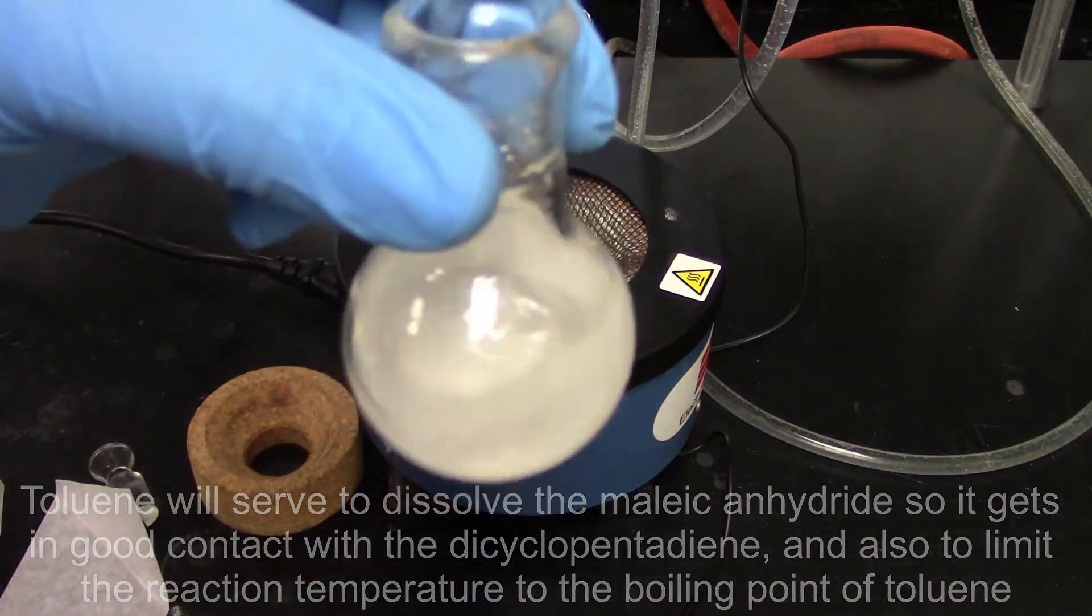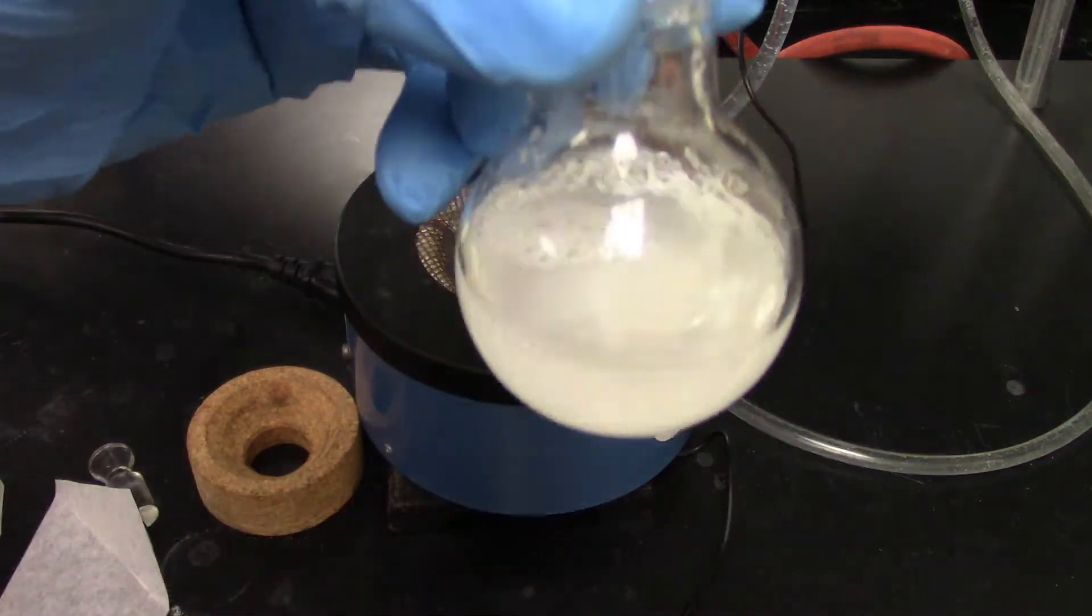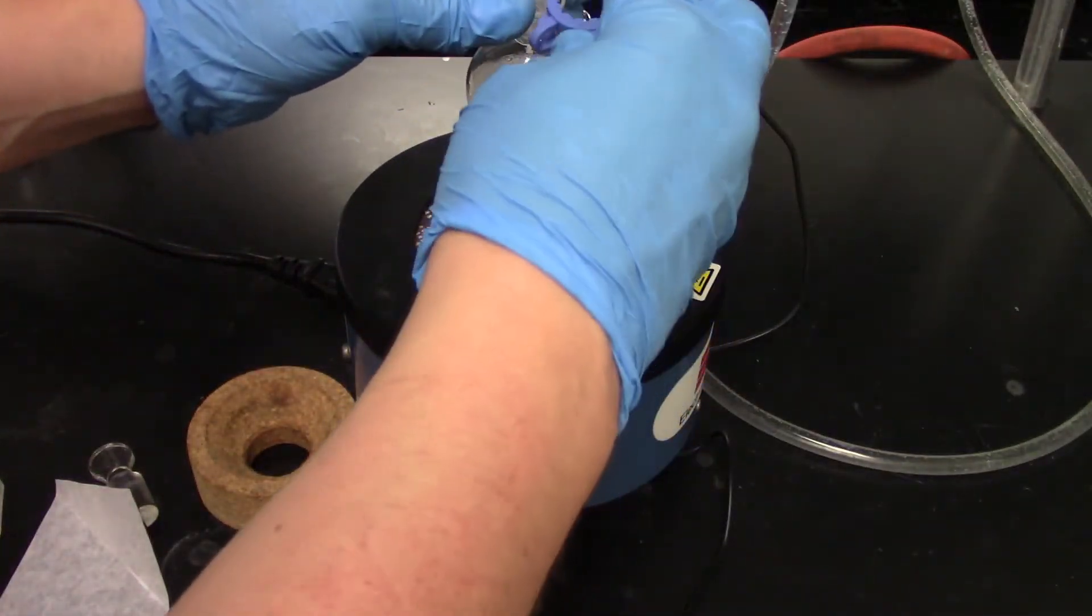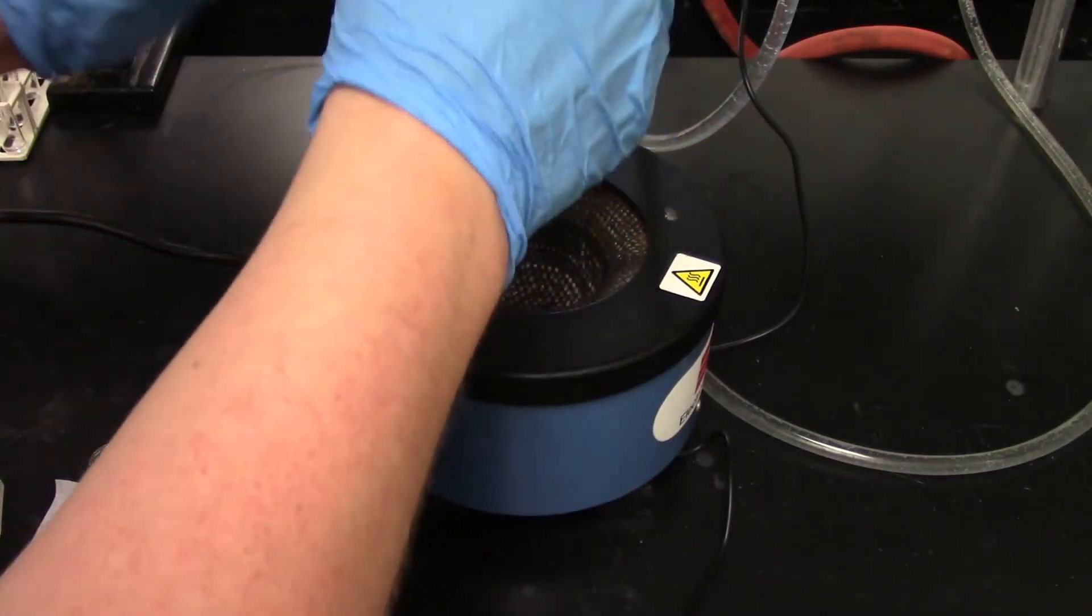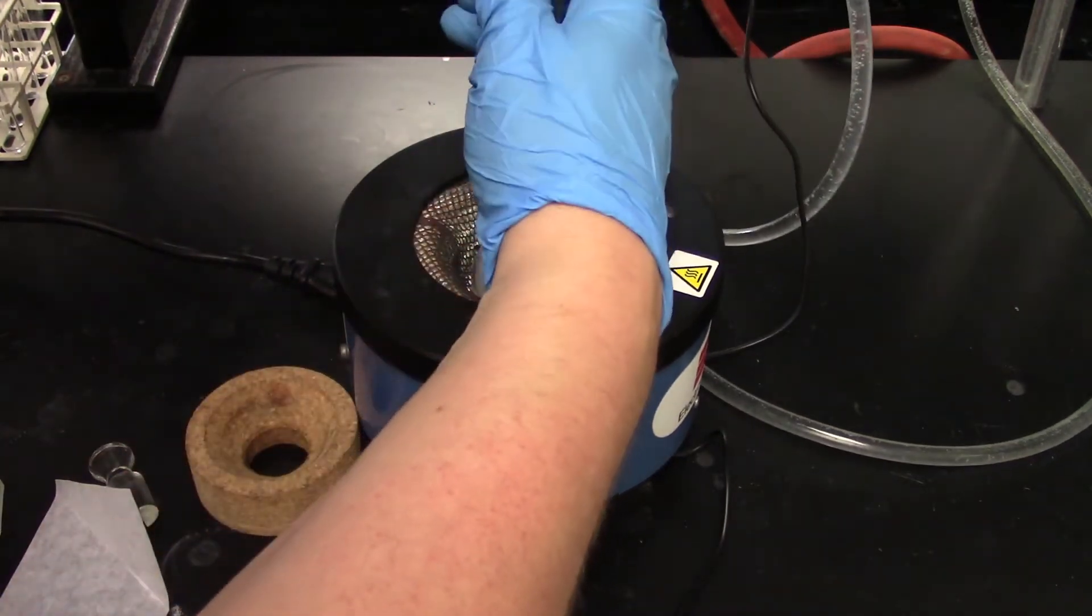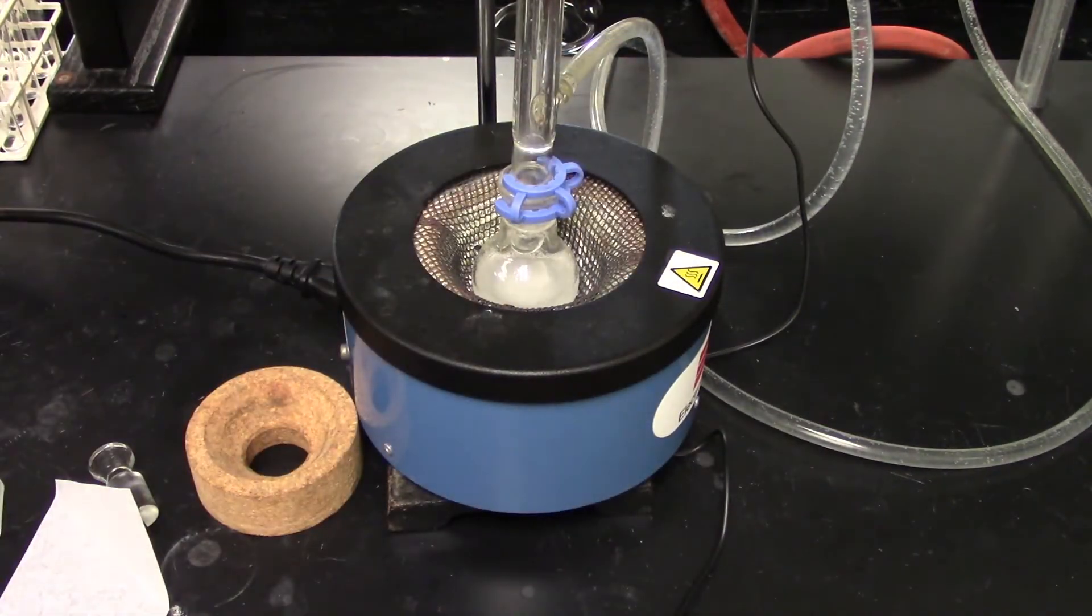So now we've got our mixture of the maleic anhydride, the cyclopentadiene, and a little bit of toluene to ensure good contact between the materials. Now we're going to run the reflux again, and this time we're not going to run it for nearly as much time. This is going to be run for 15 at 40 power.